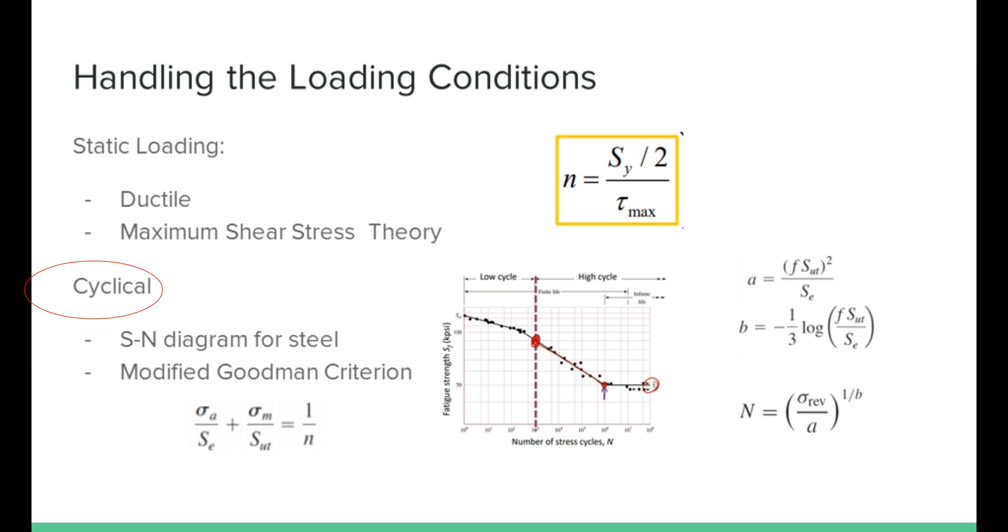For cyclical loading, fatigue analysis must be considered in this design. If the finite life is predicted, it will have a cycle between 10 to the power 3 and 10 to the power 6, as shown in the S-N diagram for steel. Since the material is AISI 1020 carbon steel, we can use the modified Goodman criterion to predict a finite life that will have between 10 to the power 3 and 10 to the power 6 cycles.